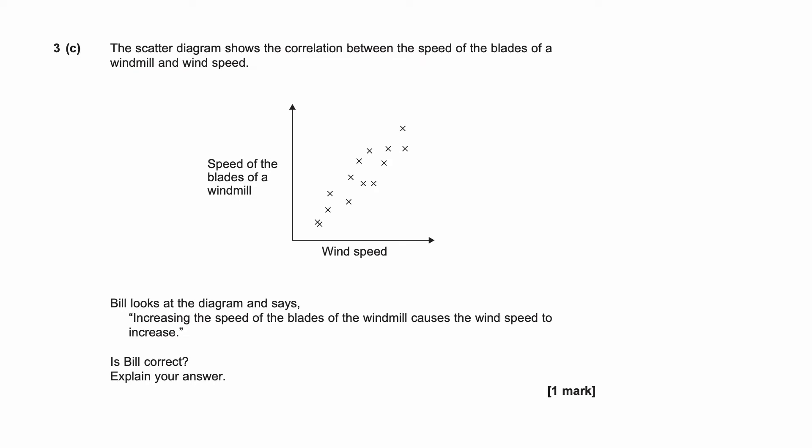3C, the scatter diagram shows the correlation between the speed of blades of a windmill and wind speed. Bill looks at the diagram and says, increasing the speed of the blades of the windmill causes the wind speed to increase. So there definitely is a correlation between the two values. We can see that, but we just have to be careful as to which is causing which. And I think in this case, it's probably the wind speed causing the speed of the blades of a windmill to increase rather than the other way round. So we've got to apply some common sense to it. So Bill is not correct. It's the other way round. Wind speed causes the blades to get faster.